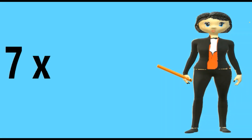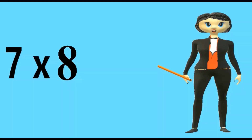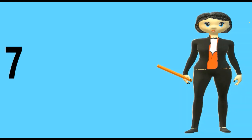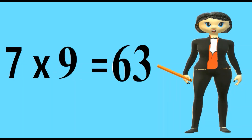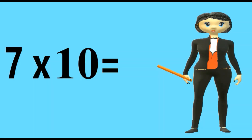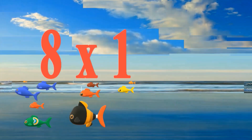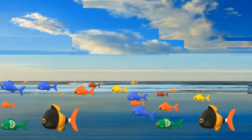Seven sevens are forty-nine. Seven eights are fifty-six. Seven nines are sixty-three. Seven tens are seventy.